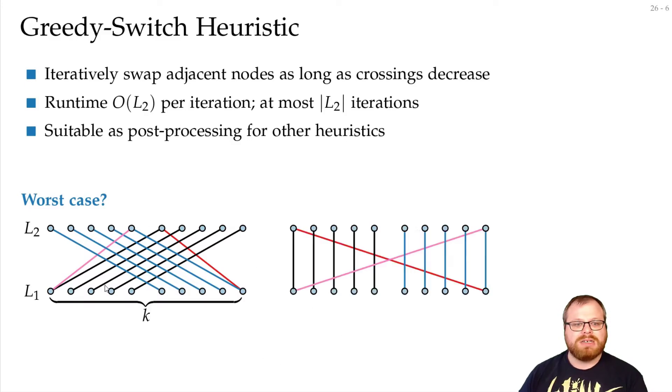On the other hand, if we completely change this and put this vertex all the way to the right and this all the way to the left, then we only have a crossing between the red and the black and blue, and the pink and the black and blue. Here we had about k squared, and here we only have 2k. If we choose k as n on both sides, then we get an order of n approximation, which is really not good.